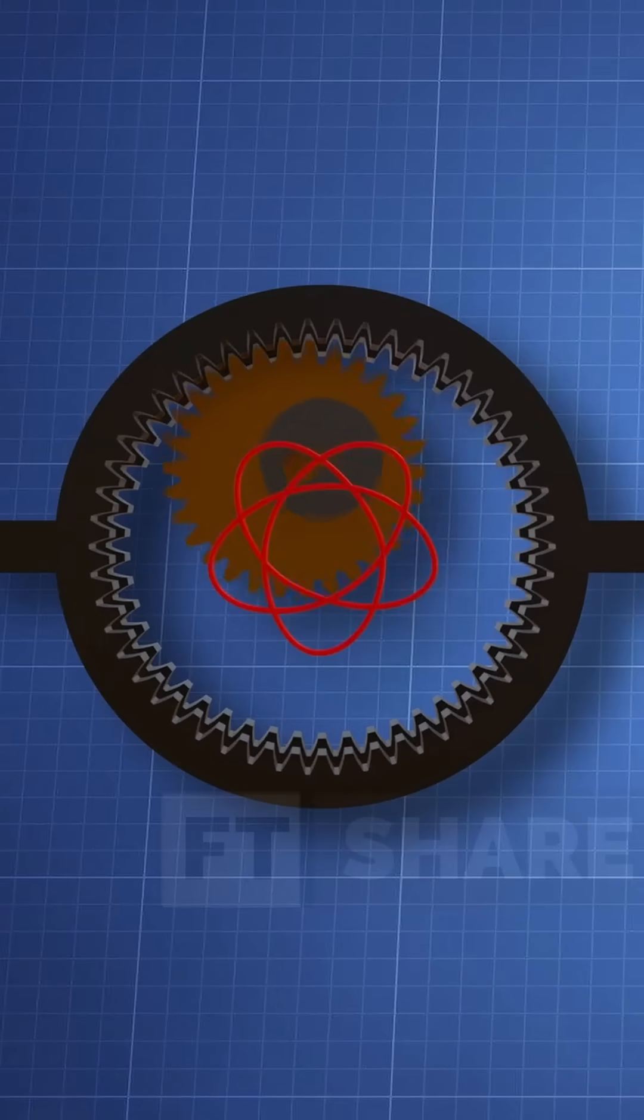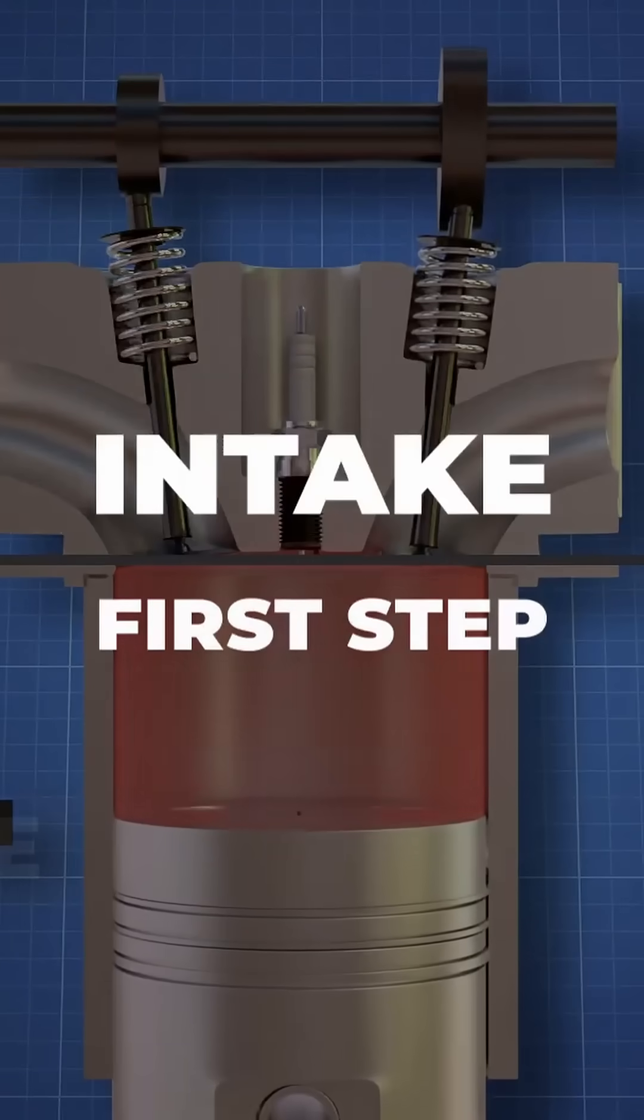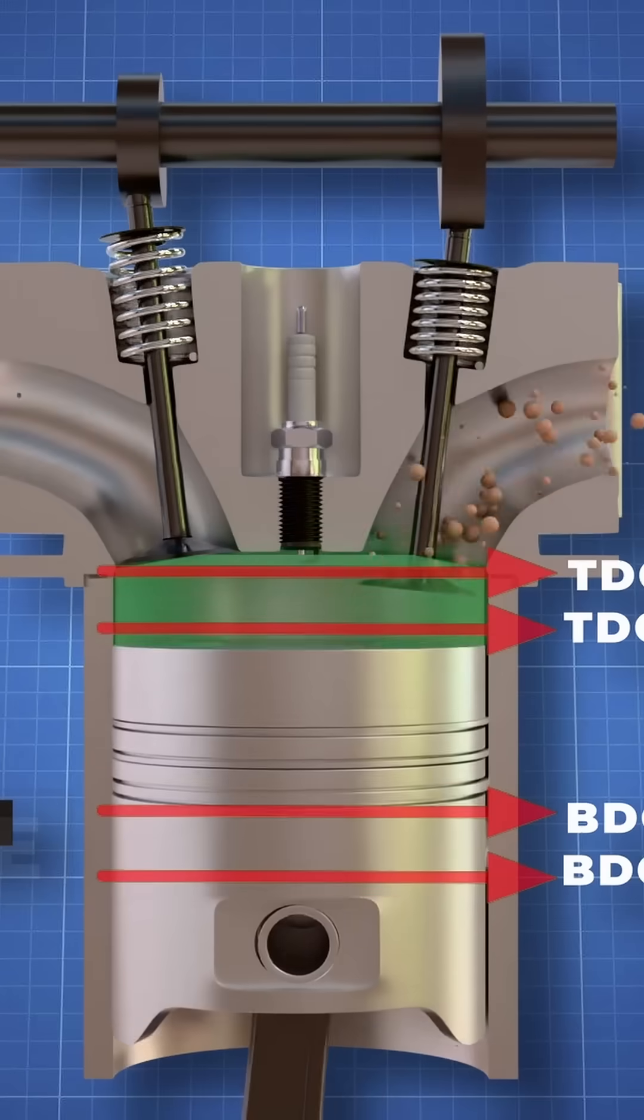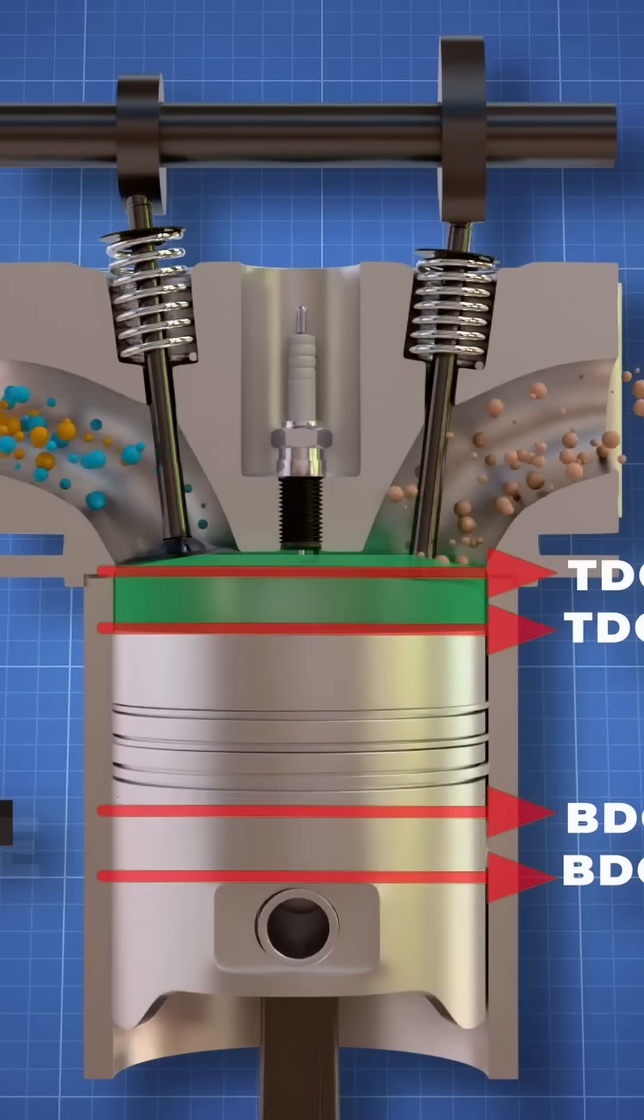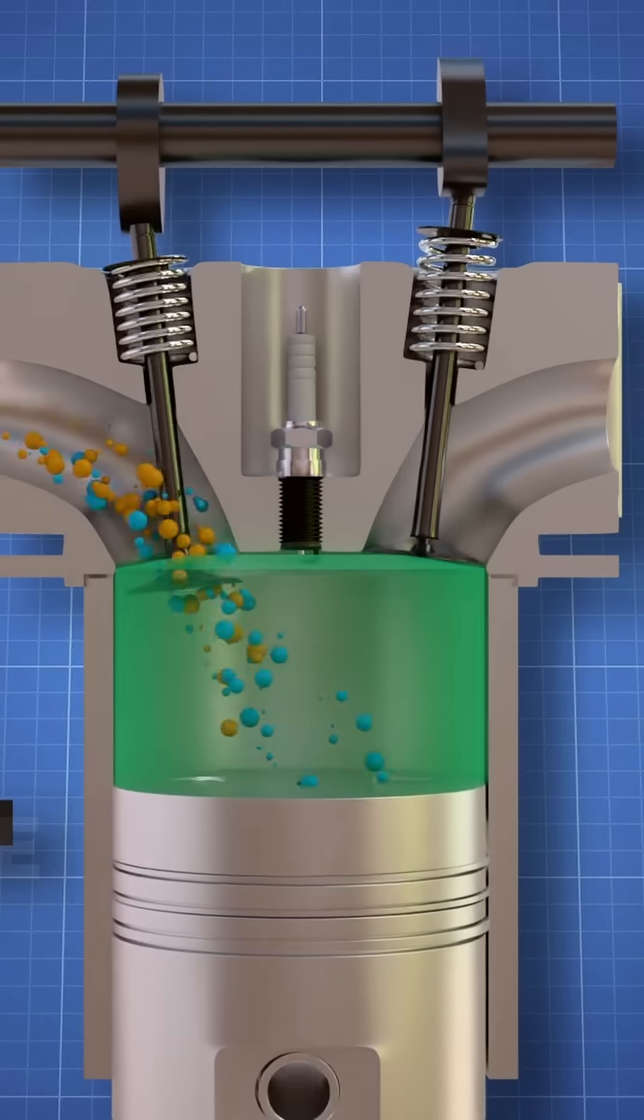The crankset rotates on a planetary gear. Now let's see how it works. Just like a four-stroke engine, the first stroke is intake in which the valve opens and the fresh air-fuel mixture enters the cylinder.